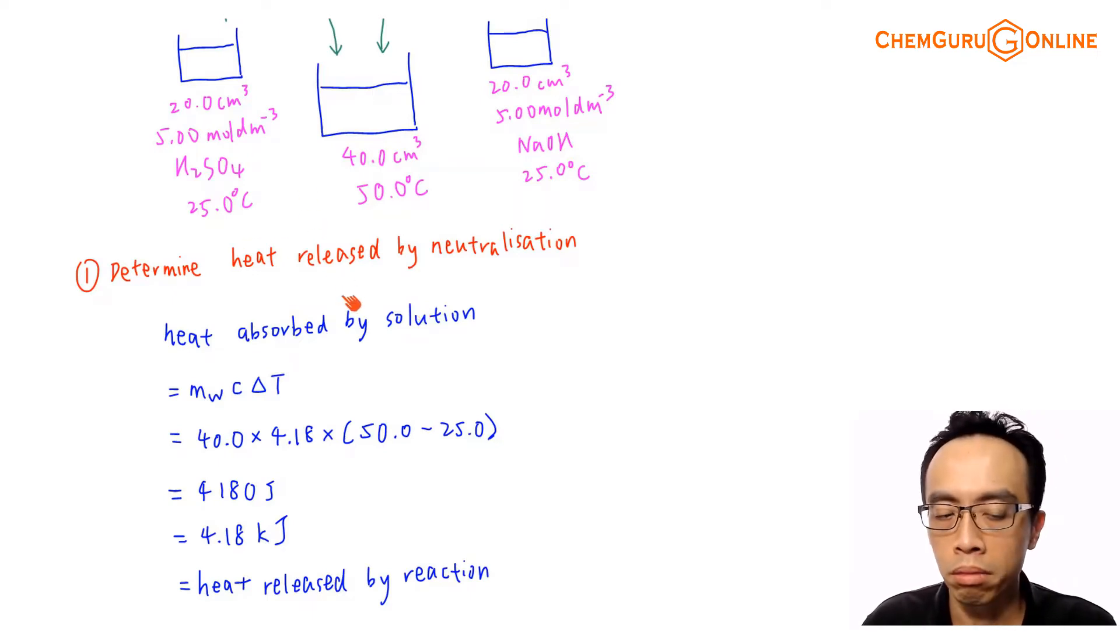Now remember the process involving neutralization is exothermic. The reaction gives off heat and heat is absorbed by the solution. Assuming there's no heat loss to surrounding and there's a temperature increase in the solution. So what I can do is I can calculate the heat that is absorbed by this 40 cm³ of solution using this expression here. Heat absorbed equals to MC change in temperature.